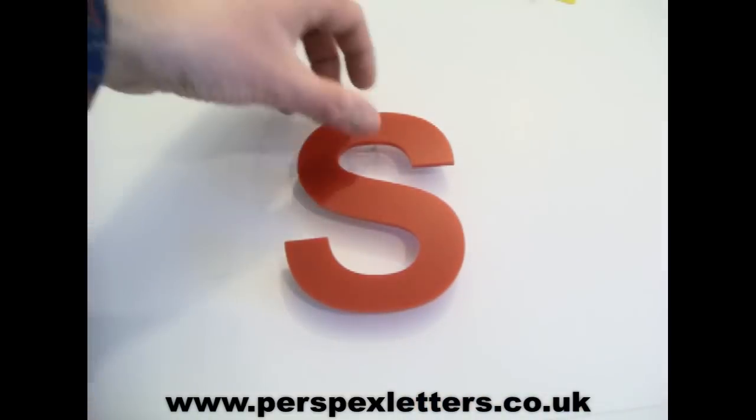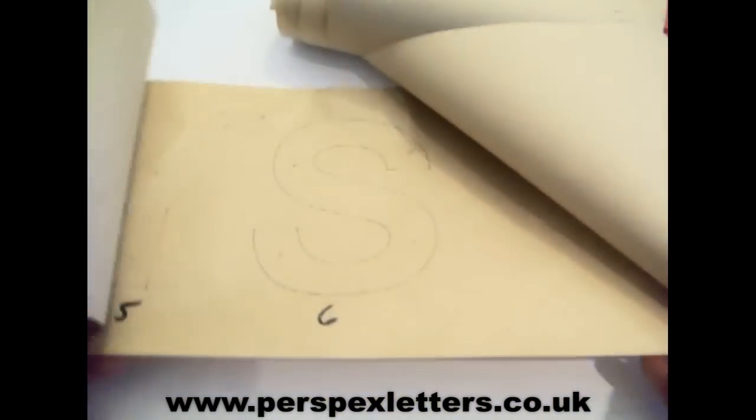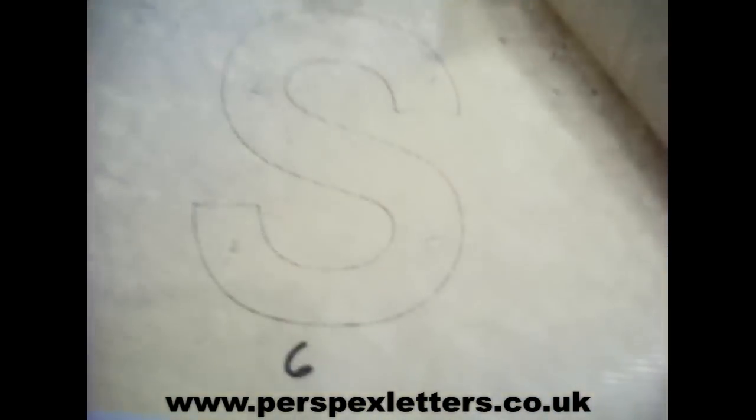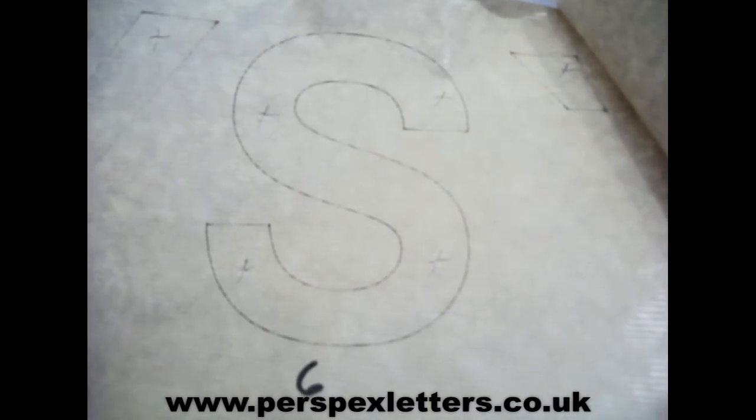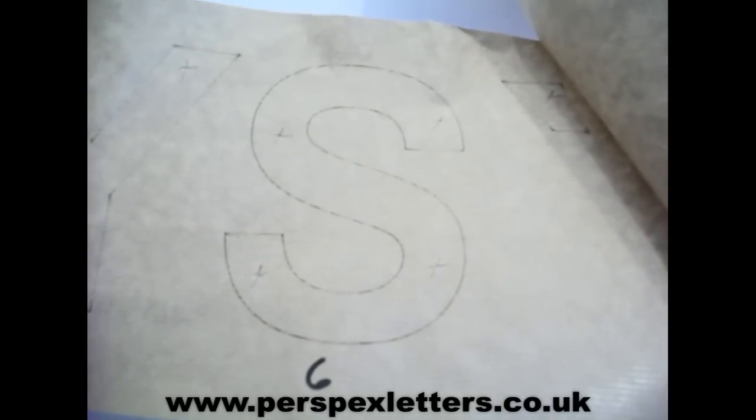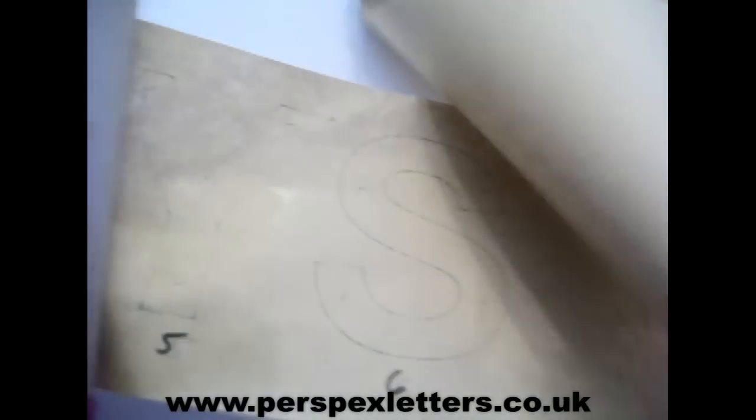Now to fit the letters, you'll be supplied with a paper template. You can see the letters on there, which you basically stick to the wall, to the fascia. The little crosses indicate where to drill your holes.